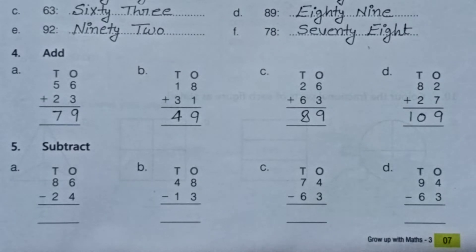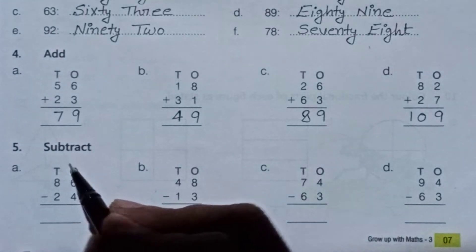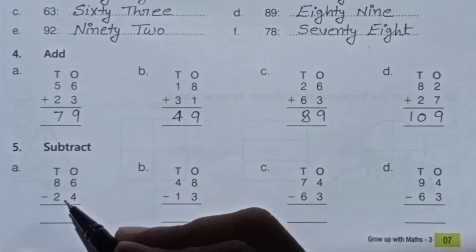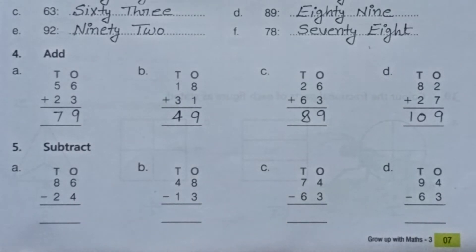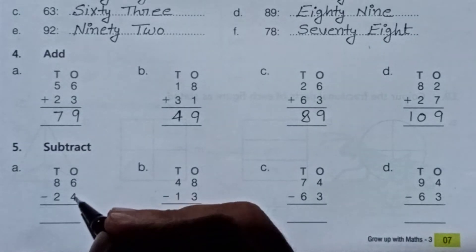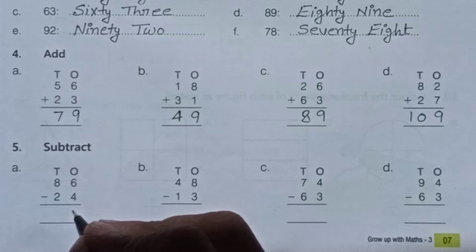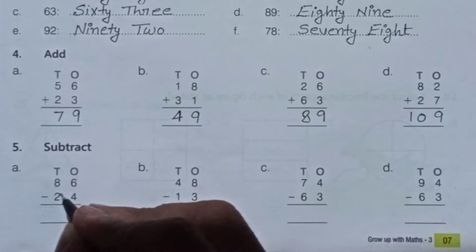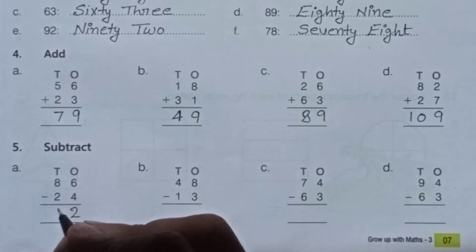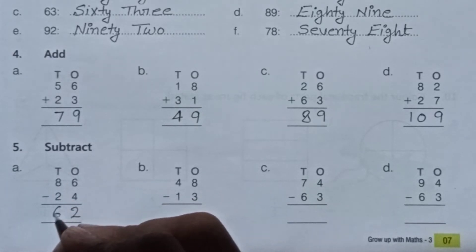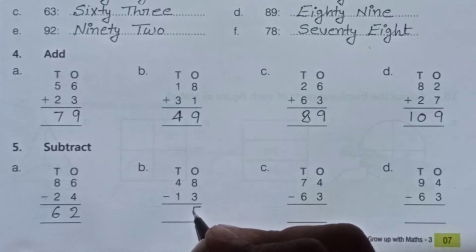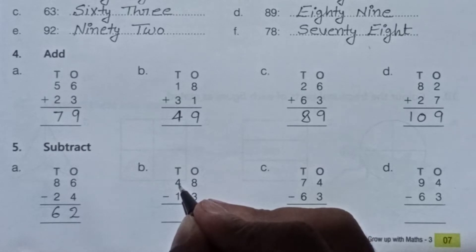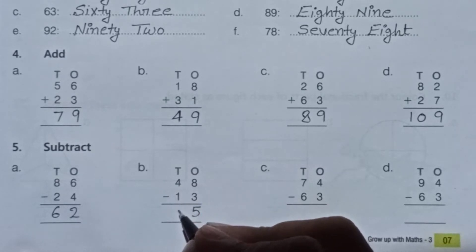Question number 5 is subtract. In this question we subtract the smaller number from the bigger number. 6 minus 4 equals 2. 8 minus 2 equals 6. 8 minus 3 equals 5. 4 minus 1 equals 3.